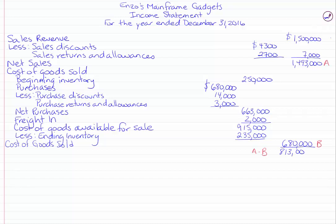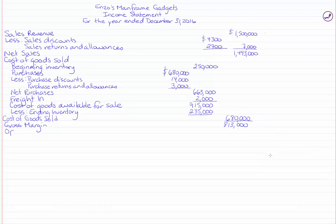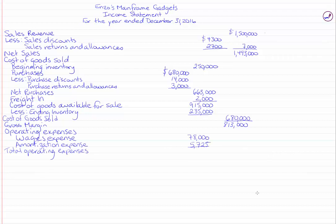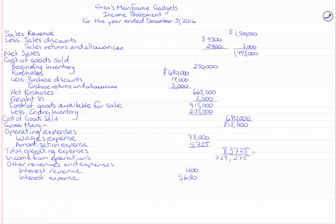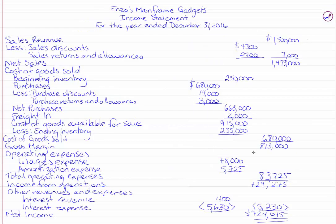The difference between cost of goods available for sale and ending inventory gives us cost of goods sold. The difference between net sales and cost of goods sold gives us our gross margin. The rest of the income statement looks identical to our previous multi-step income statement: we remove operating expenses to get income from operations, then add and subtract other revenues and expenses to give us net income of $724,045.